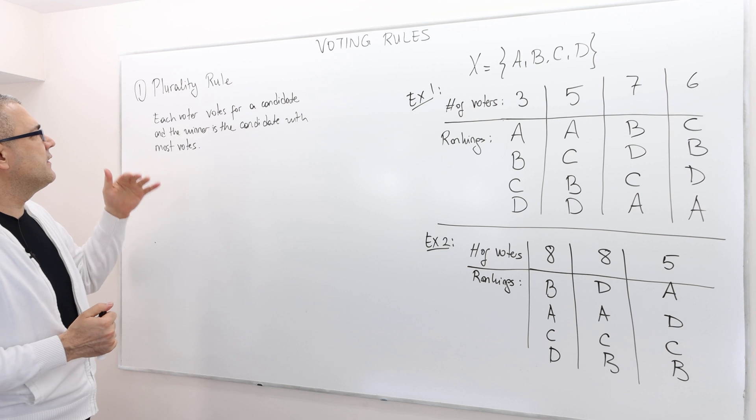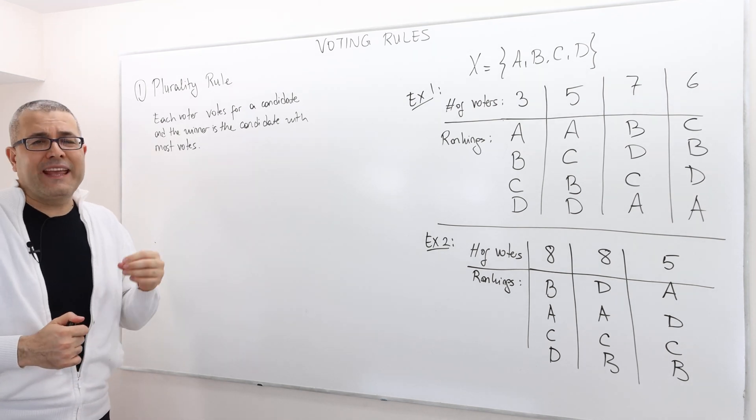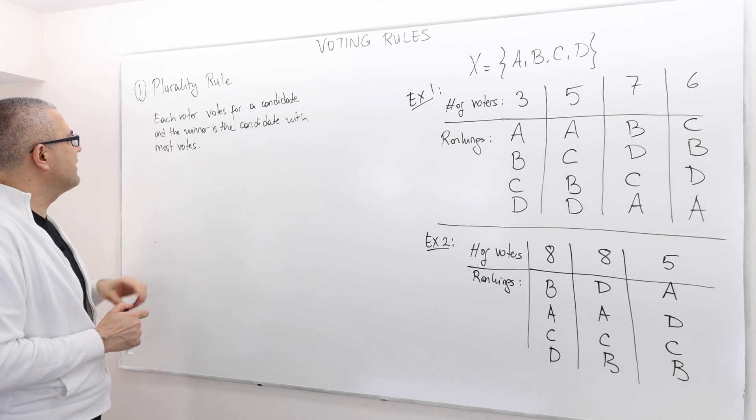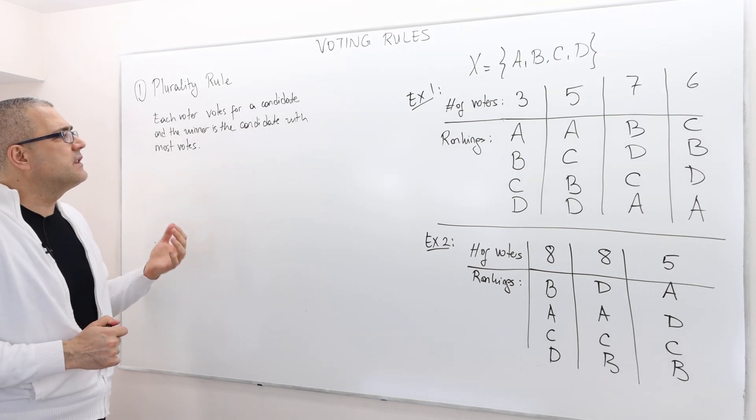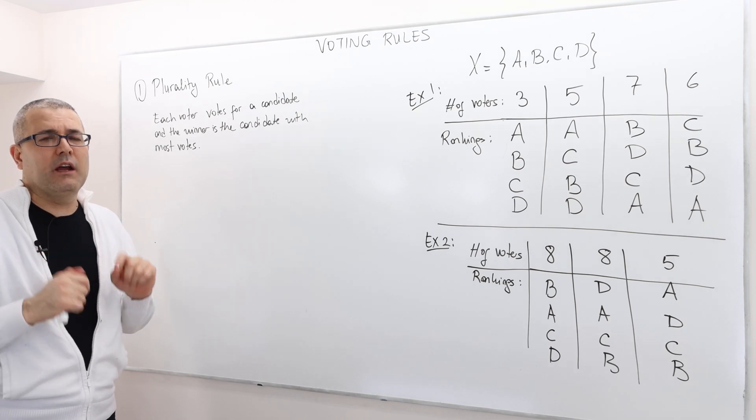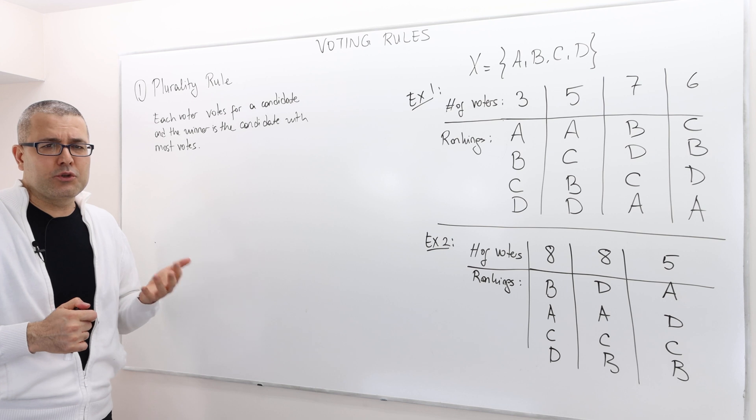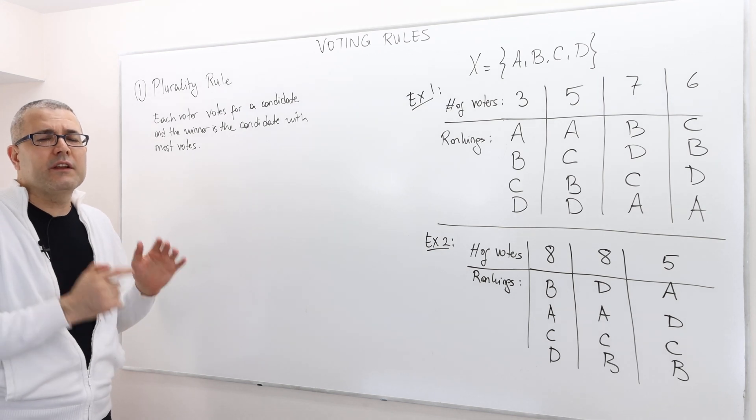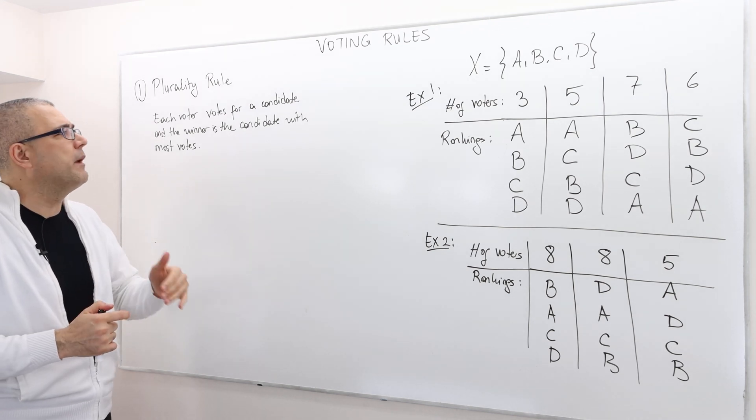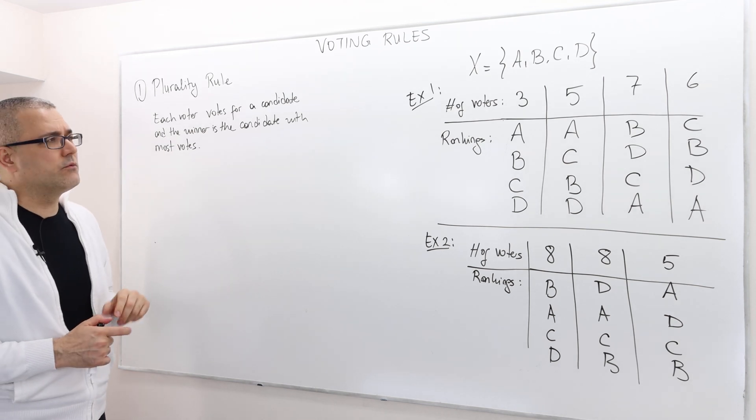So what happens is that each voter, a citizen, votes for a candidate, just for one candidate, and the winner is the candidate who gets the most votes. Even though the candidate doesn't get the majority, it doesn't matter, whoever gets the most votes basically is the winning candidate in the plurality rule.